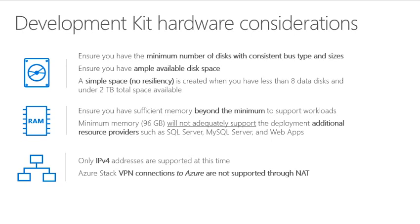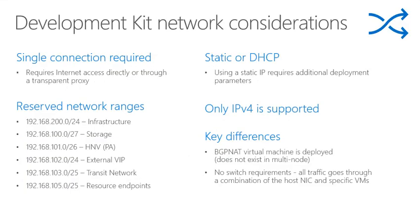For networking: VPN across Azure Stack is not supported through the native method. A single network connection will be required, and reserved network ranges will be needed for infrastructure storage, HNV, external VIP, and transit networks. Currently IPv4 is supported with IPv6 in preview. A key difference is that the Border Gateway Protocol (BGP) virtual machine is deployed without multi-node support. No switches are required, and static or dynamic addressing is supported — static is recommended for additional parameters.